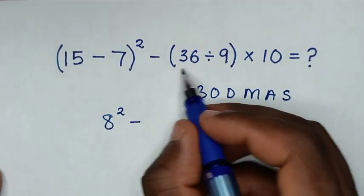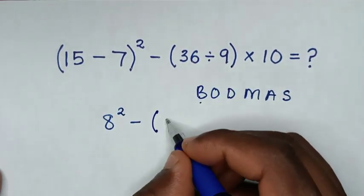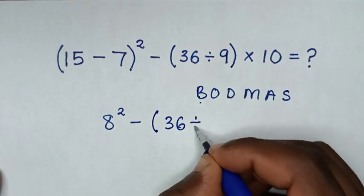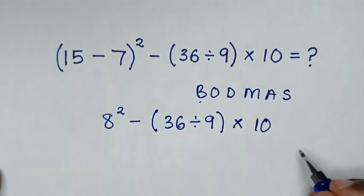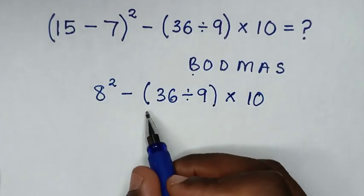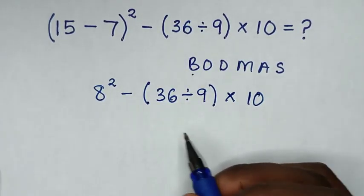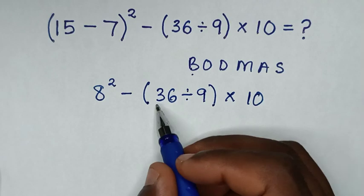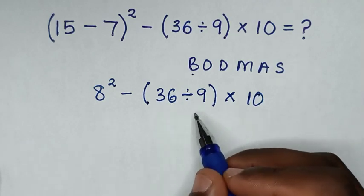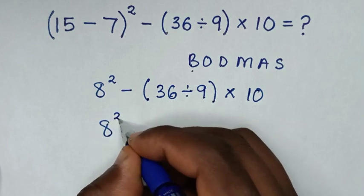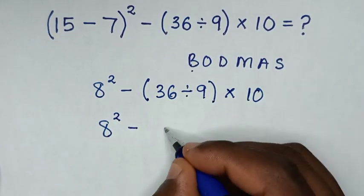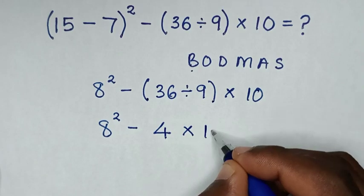Then minus these brackets, 36 divided by 9 bracket, then times 10. Then we'll deal with this second bracket whereas inside the second bracket is 36 divided by 9 which is 4. So it will be 8 squared minus 4 times 10.